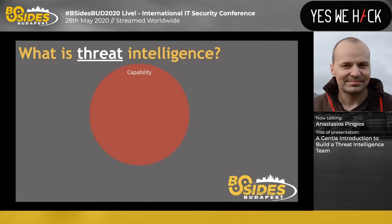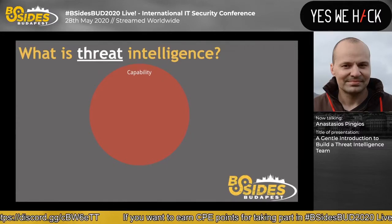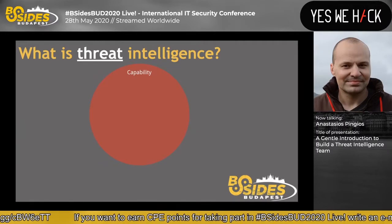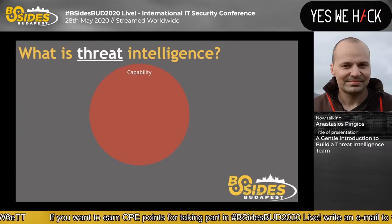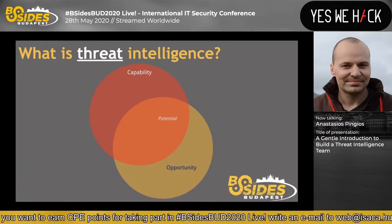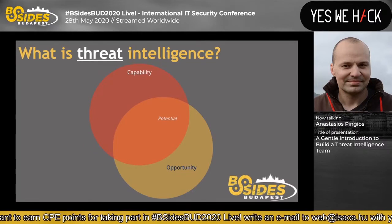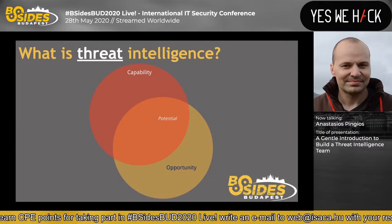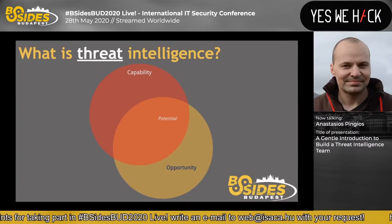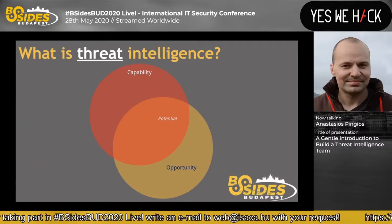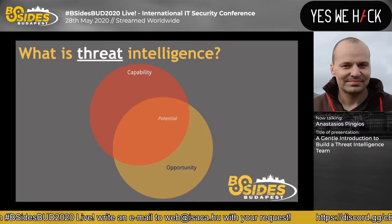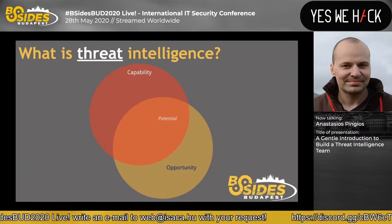That threat actor or threat group, in order to harm somebody — whether through a phishing campaign, taking over an account, or a targeted intrusion — needs to have the capability to do that: the technical knowledge, the tooling, the infrastructure. That's the first part of what a threat is. The second part is opportunity. It doesn't matter if they are the most capable threat actor out there if they never have the opportunity to use their capabilities. If someone has both, they are a potential threat — for example, if they have a zero-day for software or hardware you use and you also expose it to the internet.